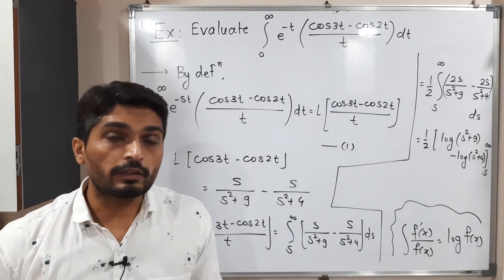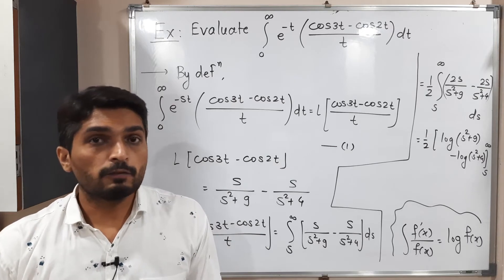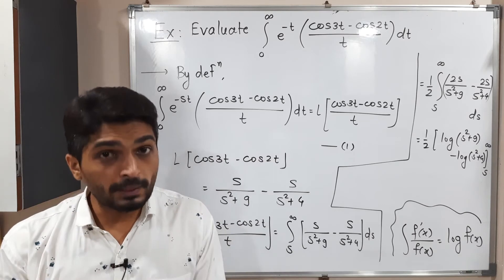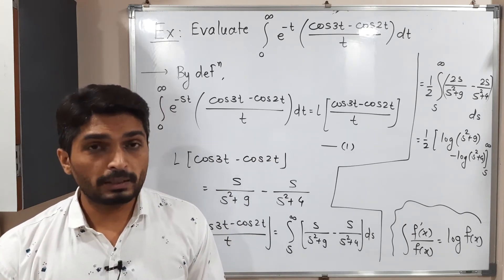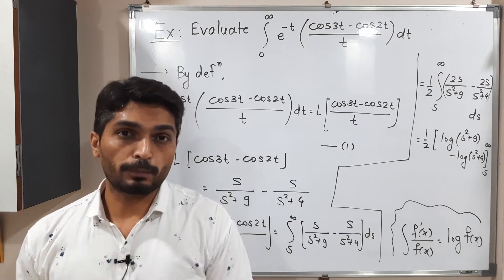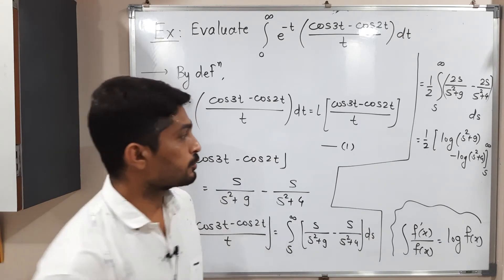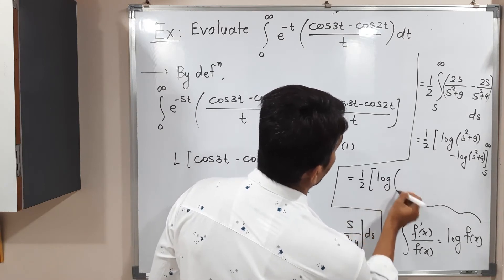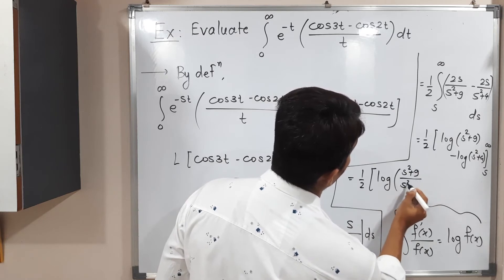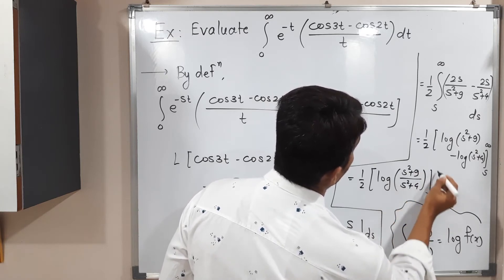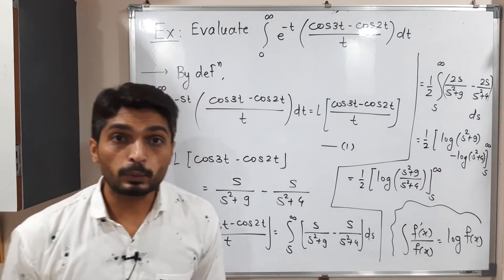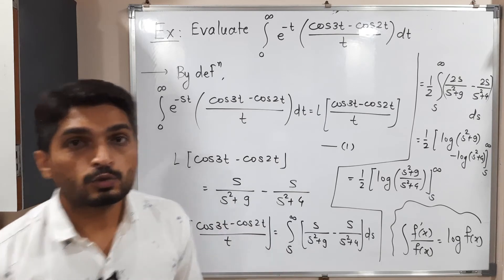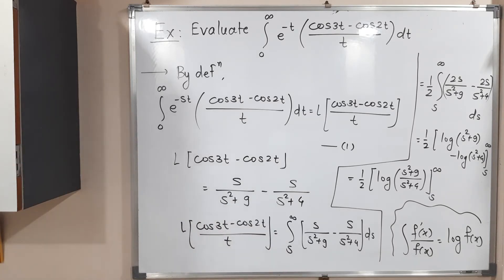We will not put the limits directly yet. First we use the log property: log a minus log b equals log(a/b). So we write (1/2) log[(s² + 9)/(s² + 4)], with limits from s to infinity. Now we can substitute the upper and lower limits.